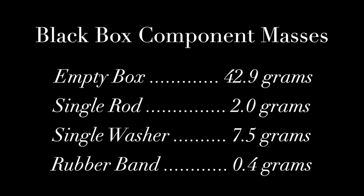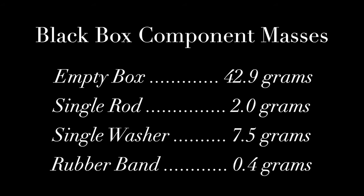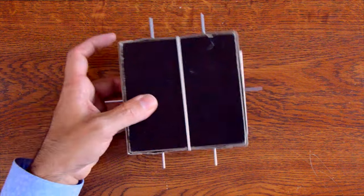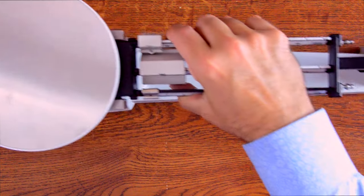Here are the masses of each black box component. Please note that our rods are not perfectly identical and neither are the washers, so their masses will only be close to these values. Okay, now we'll measure the mass of our untested black box using a triple beam balance.